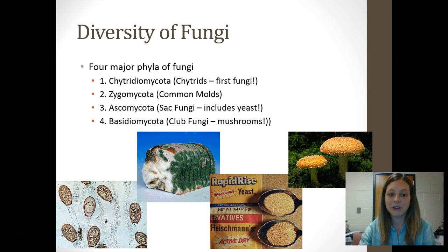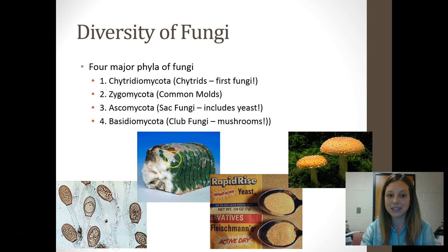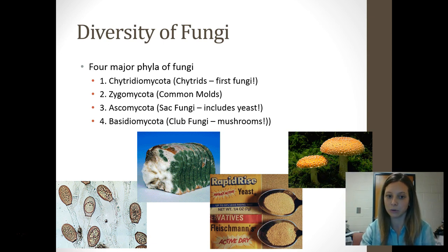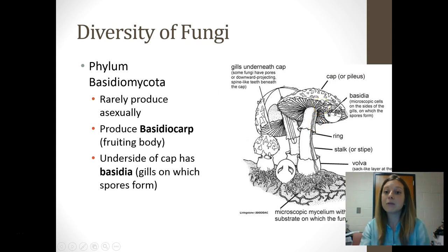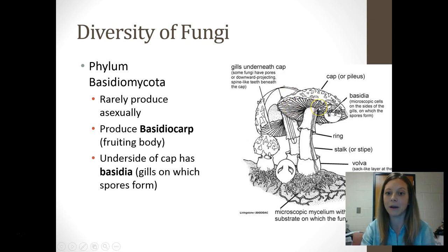There are four major phyla of fungi. There are the chytrids, which we think are the most ancient, very first type of fungi that ever existed. There are the common molds, the zygomycotes. There are the sac fungi or ascomycotes, which includes yeast. And then there are the ones you're most familiar with — the club fungi belonging to the basidiomycota group. The basidiocarp is the fruiting body that some of you like to eat, and they reproduce sexually using spores produced by the basidia or gills underneath the cap of the mushroom.